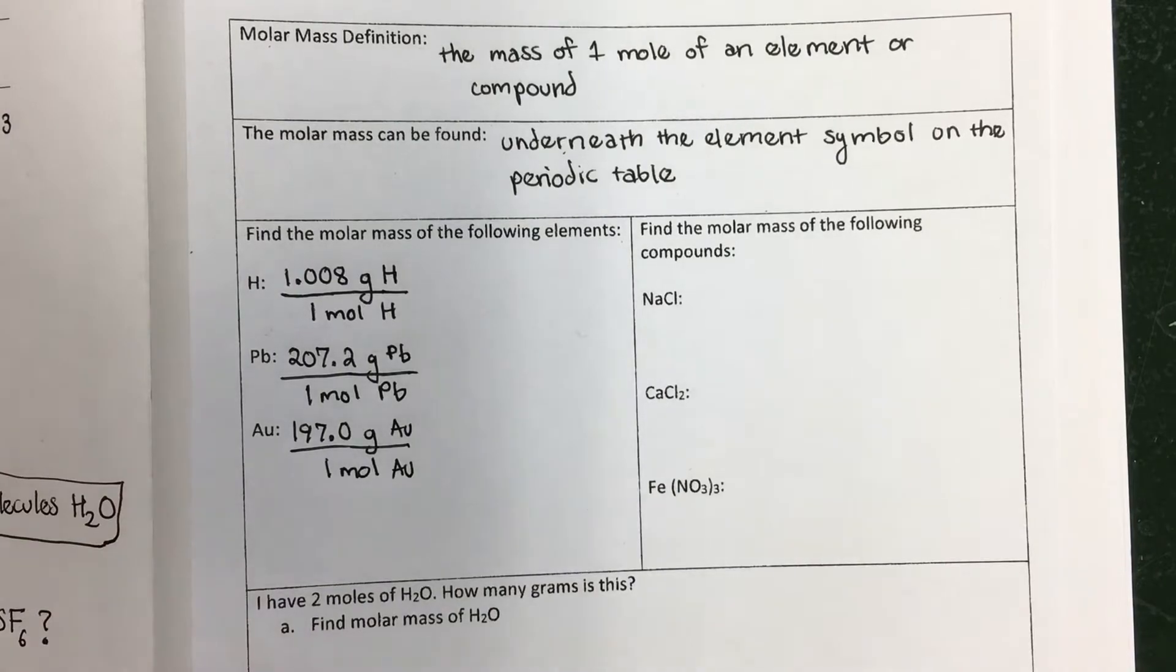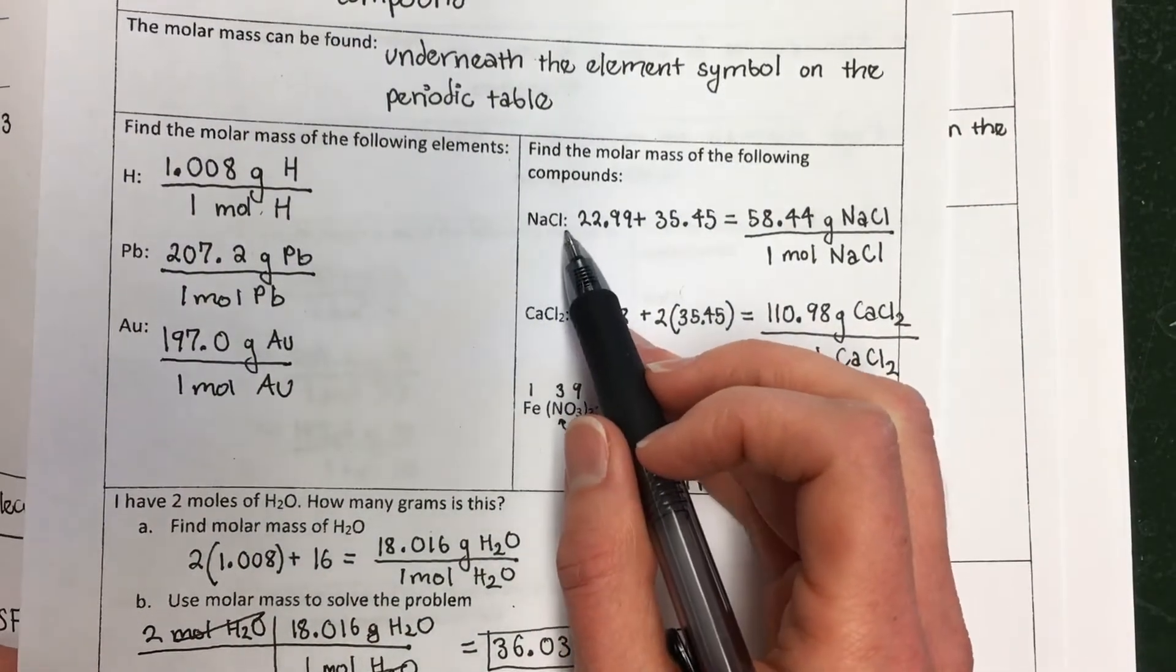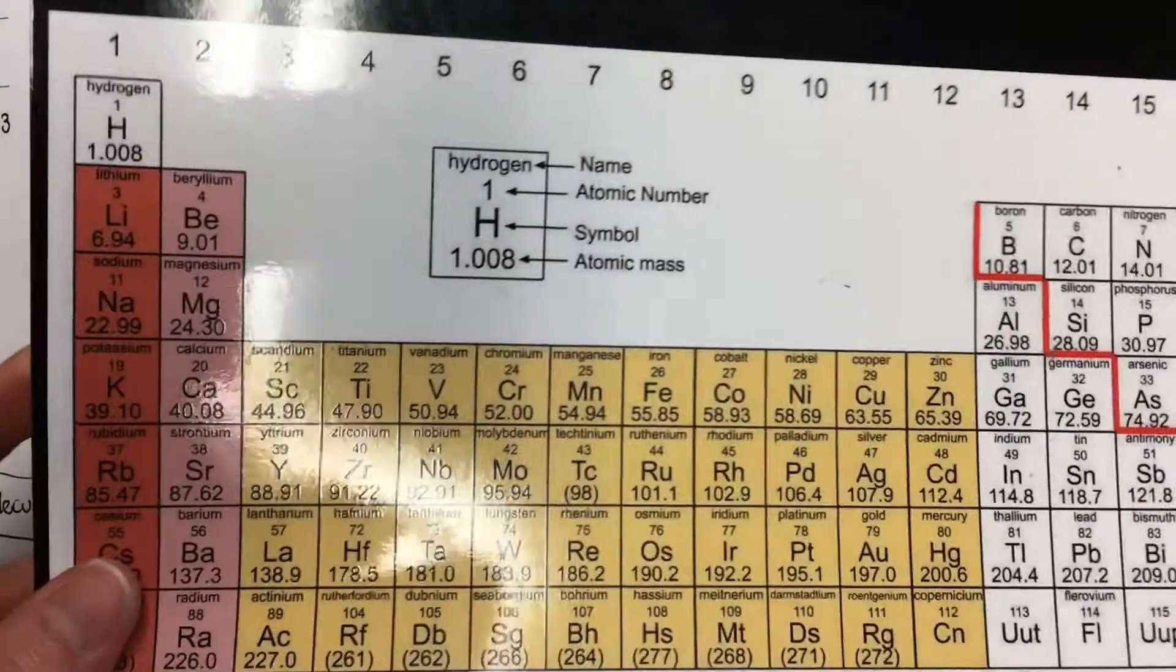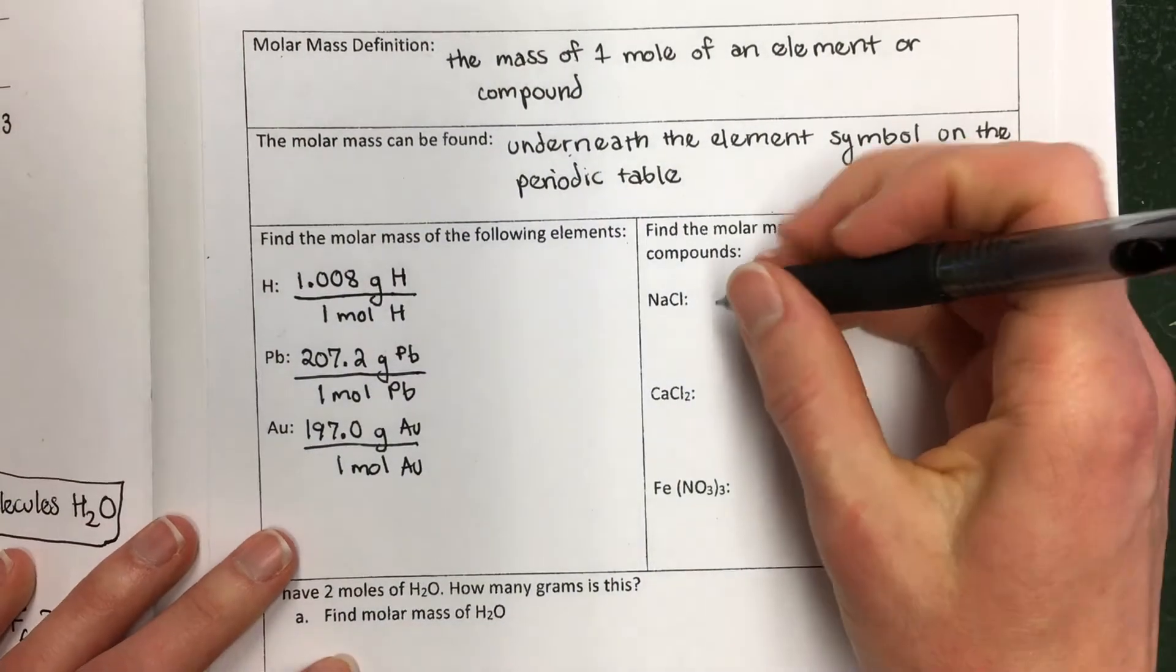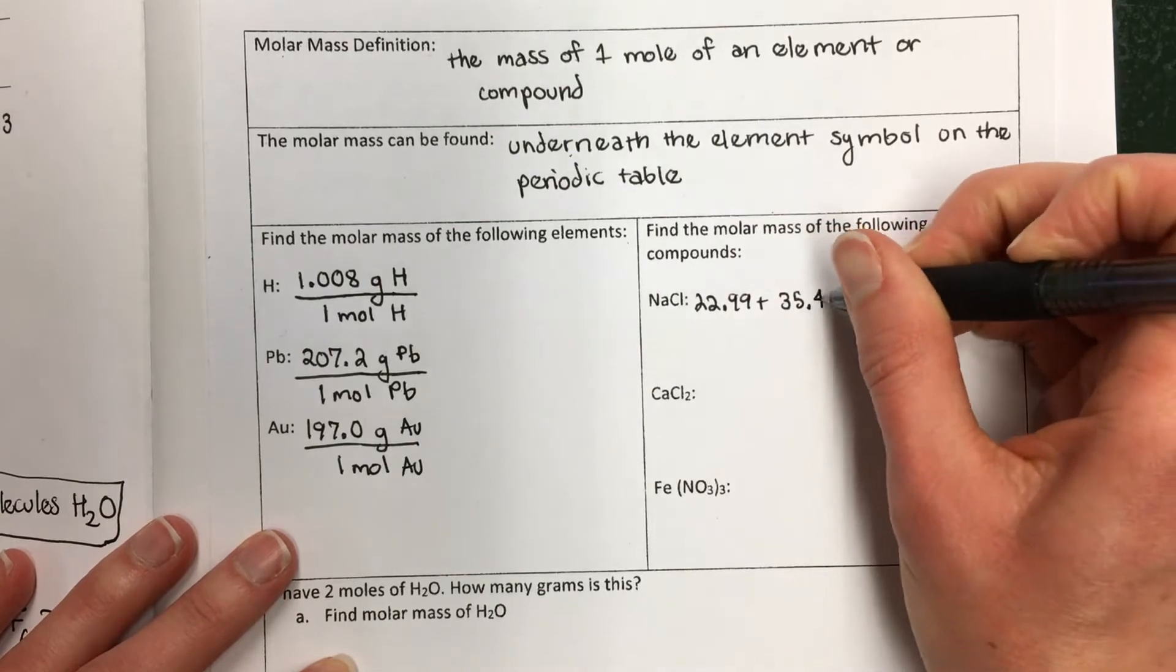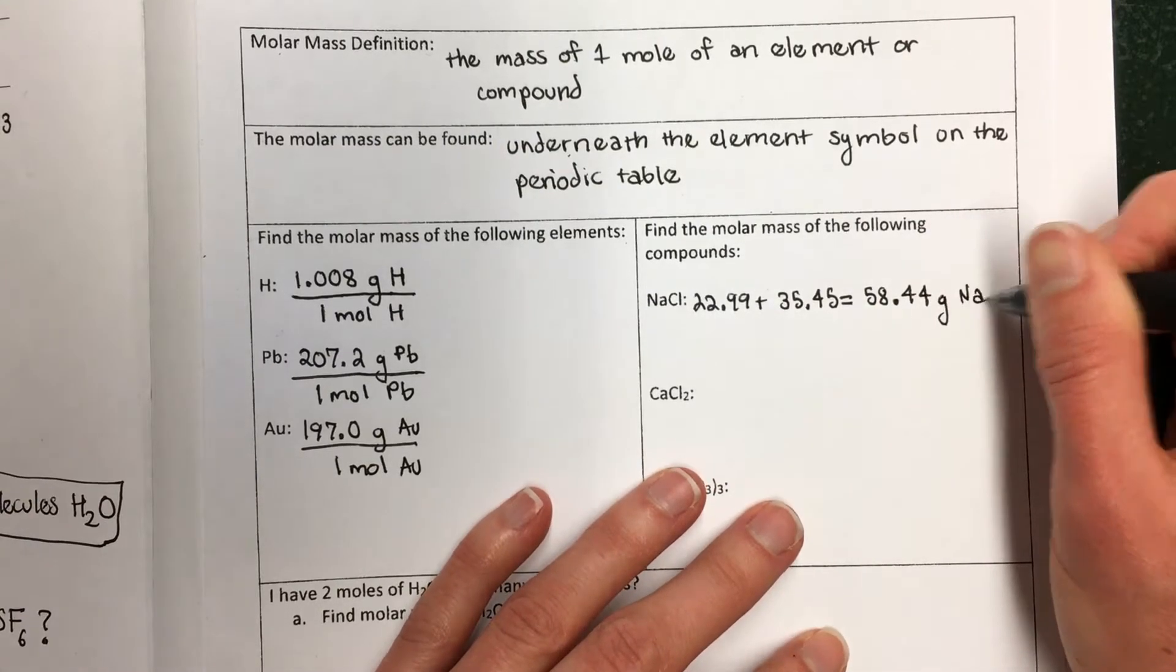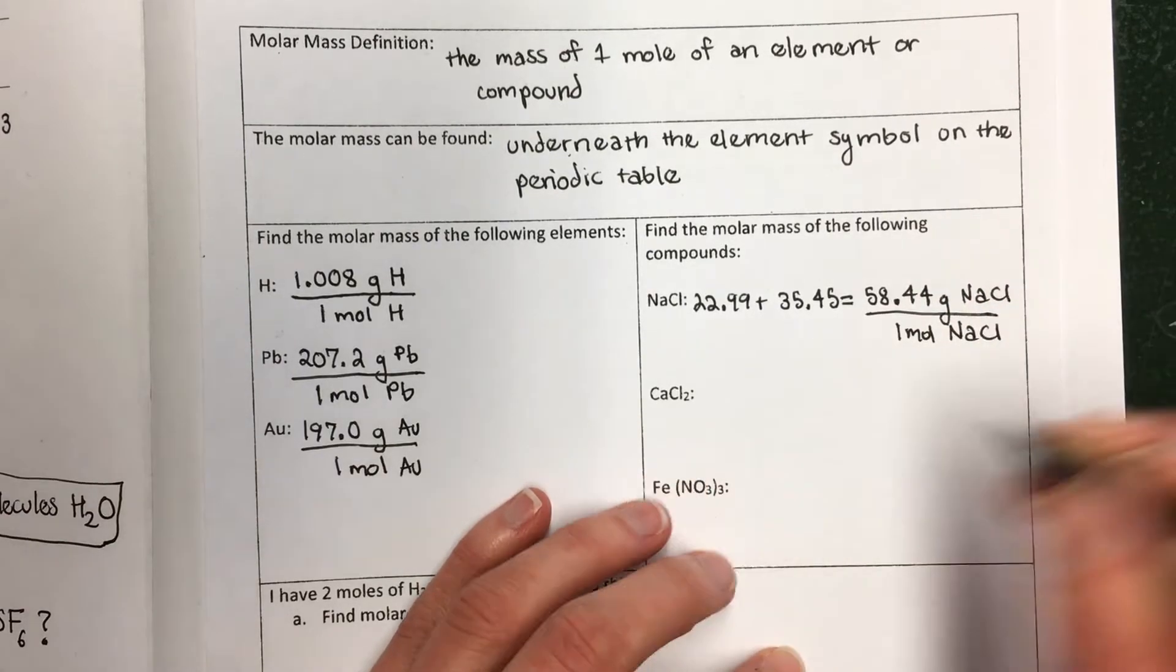Now, let's do some compounds. To find the molar mass of NaCl, it's really easy. I just add up the molar mass of Na and the molar mass of Cl. So looking at the periodic table, Na is 22.99, Cl is 35.45. I'm not going to show you me calculating this because I think you guys can use a calculator. You end up with 58.44 grams of NaCl over one mole of NaCl.